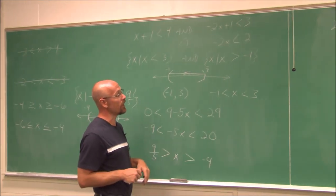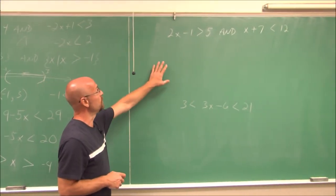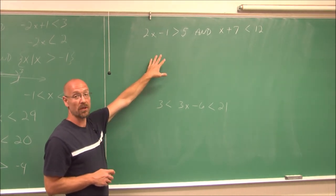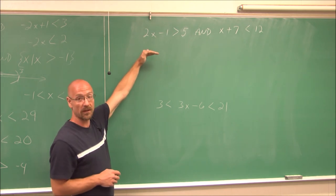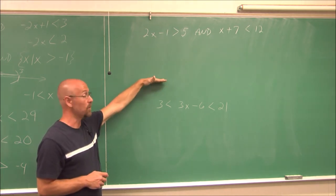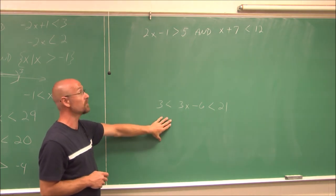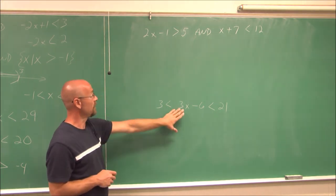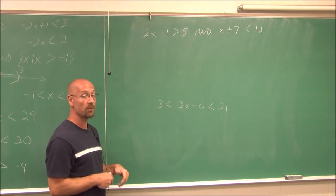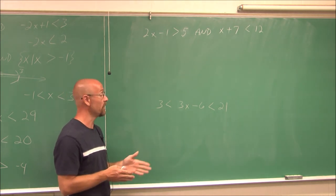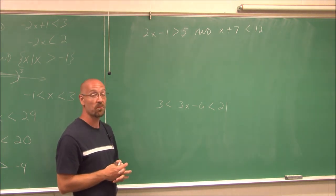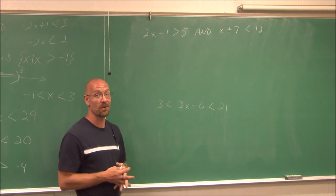Now we'll go to the last board. Here are two practice problems — an intersection and a double inequality. Try these yourself. Write your answer in set notation, graph it, and write it in interval notation. Choose test points and make sure you have the correct answer. This has been Section 1.7, Part 1. Thank you for watching.